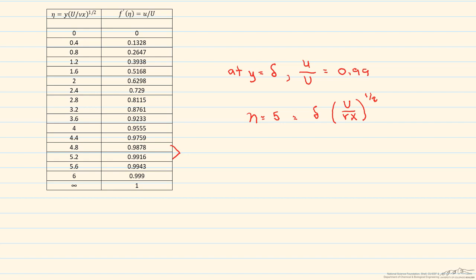To find the boundary layer thickness, we rewrite this as delta equals 5 times the square root of the kinematic viscosity times x divided by big U, the free stream velocity.